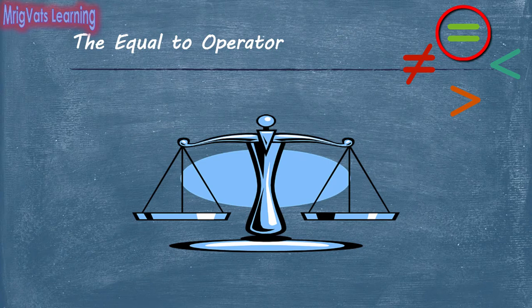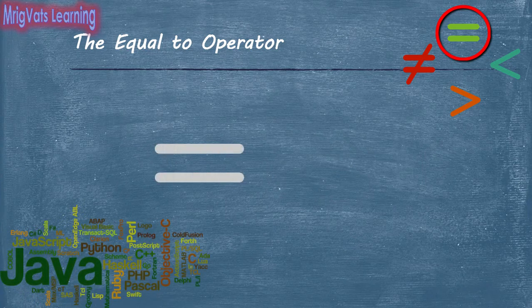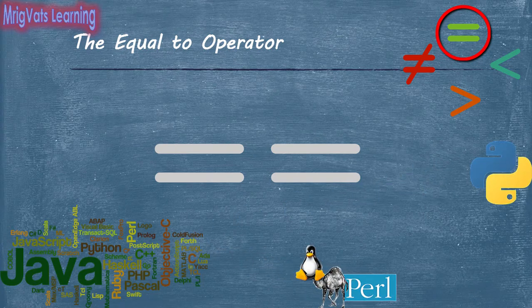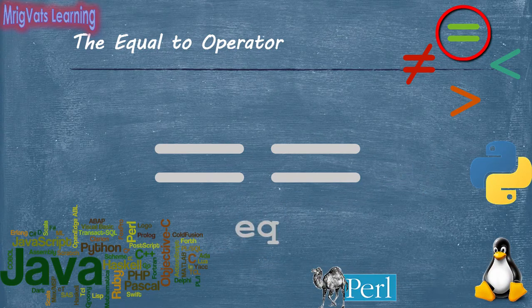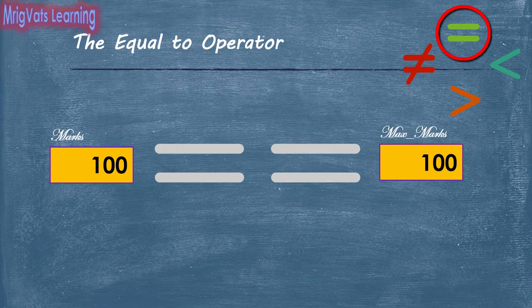Equality is one of the relational operators that you use to check if two values are equal. Most programming languages support the double equal to sign to check for equality. However, some languages such as Python, Perl and shell scripts in Unix support EQ as the relational operator. The computer compares the values of two operands and gives true if the values are equal and false otherwise. Remember not to confuse the equality operator with the assignment operator, which assigns the value of the right-hand side operand to the left-hand side operand.